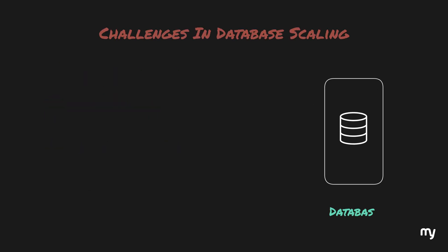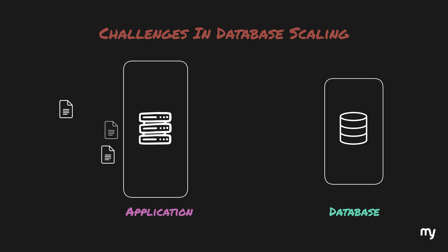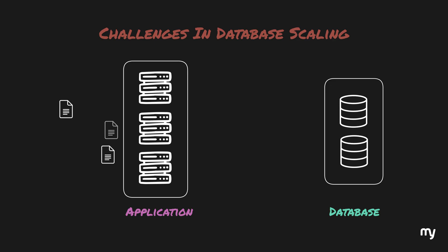Imagine that you have a database which backs your application. As traffic grows, you decide to add more server replicas while still using the same database. Eventually, the database will also reach its capacity and you would need to scale it as well. So naturally, you scale it the same way by adding more replicas to handle the increasing load. To manage these replicas, you introduce a database proxy — a special type of load balancer designed specifically for databases — and configure your application servers to send all queries to the proxy, which distributes them across the replicas evenly.